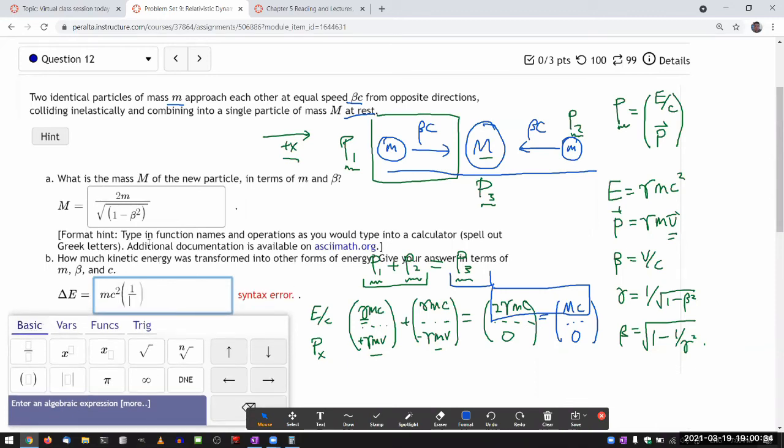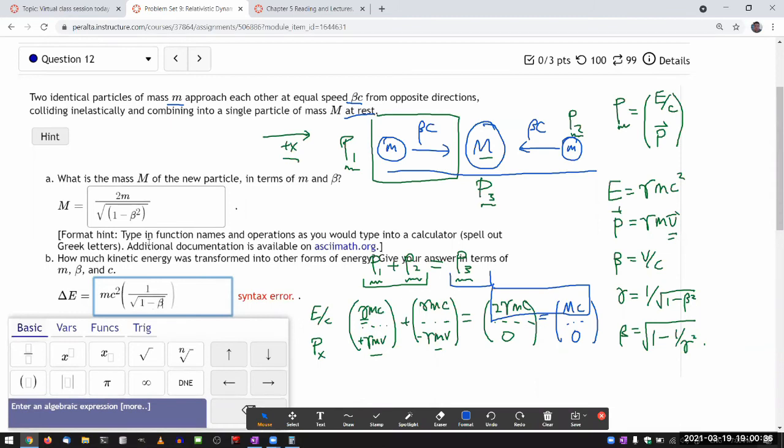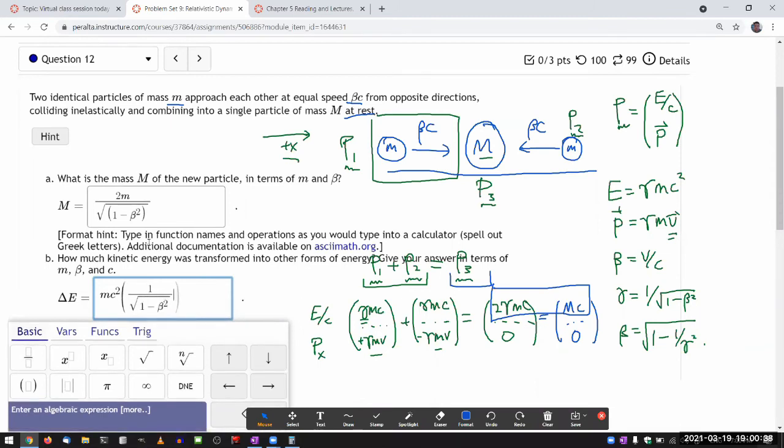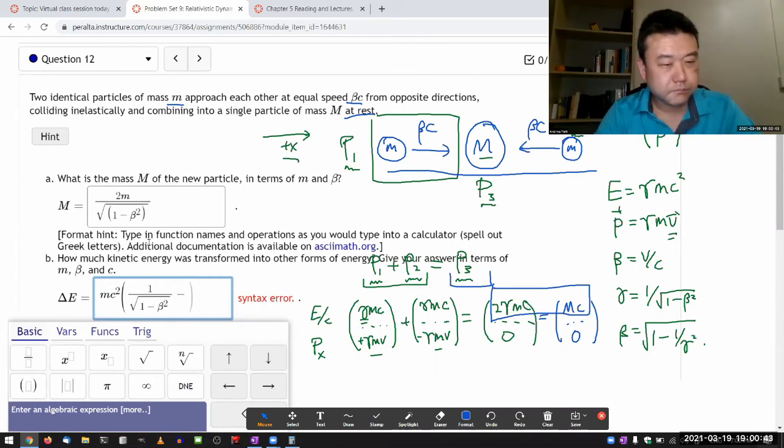So mc squared times this quantity here: one over square root of one minus beta squared—and there's two here, minus two, because there were two particles before.